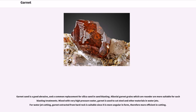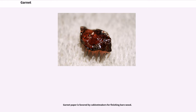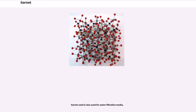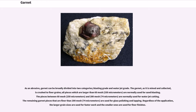Garnet sand is a good abrasive and a common replacement for silica sand in sandblasting. Alluvial garnet grains, which are rounder, are more suitable for blasting treatments. Mixed with very high-pressure water, garnet is used to cut steel and other materials in water jets. For water jet cutting, garnet extracted from hard rock is more suitable since it is more angular in form and therefore more efficient in cutting. Garnet paper is favored by cabinet makers for finishing bare wood, and garnet sand is also used as a water filtration media. As an abrasive, garnet can be broadly divided into two categories: blasting grade and water jet grade. The garnet, as it is mined and collected, is crushed to finer grains, with pieces larger than 60 mesh (250 micrometers) normally used for sandblasting.